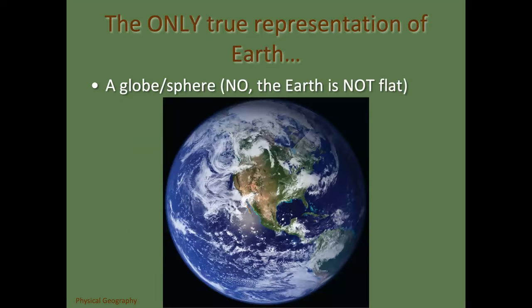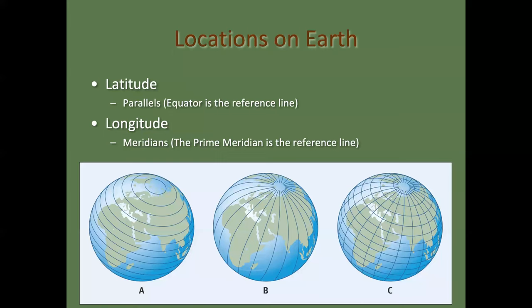Latitudes are also called parallels — that's image A. Longitude or meridians is what you see in image B. When you put them together in image C, you have the grid. When you open your phone and go to Google Maps, this is essentially what you're seeing. That little blue dot — you know what I'm talking about — it's telling you that you are at latitude whatever and longitude whatever, wherever you happen to be.